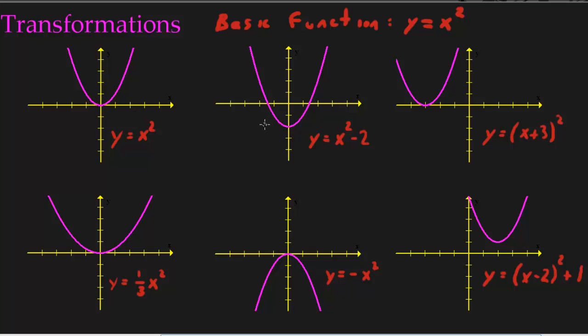So here is our basic function, and then the following five graphs are all called transformations from this basic function. We're only going to focus on x squared, because it will be the same for any basic function. But I think it's just easier to look at x squared, because it's a function we all are very familiar with.